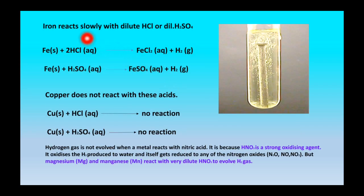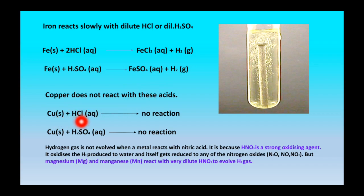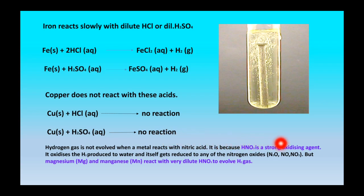Iron reacts slowly with dilute HCl and H₂SO₄. When iron reacts with HCl it produces FeCl₂ and hydrogen gas. However, copper does not react with either HCl or H₂SO₄. Some metals do not liberate hydrogen gas with dilute HNO₃ — this is an important question. Dilute nitric acid does not liberate hydrogen gas because nitric acid is a strong oxidizing agent that oxidizes the hydrogen produced and converts it into water.